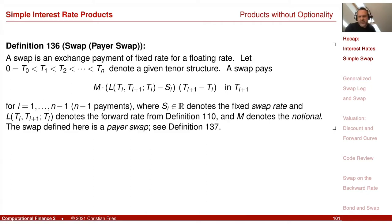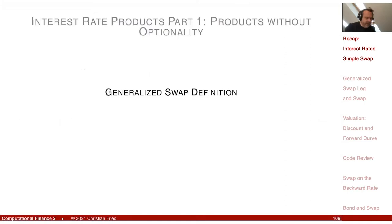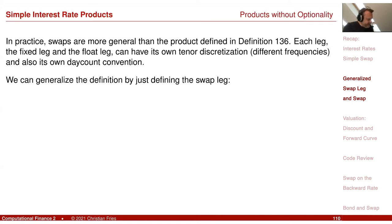We defined the swap rate as the constant rate that makes the value of the swap zero. So that was what we did so far. And speaking of the swap, the swap is a very important product, and I'd like to define a generalized version of it.